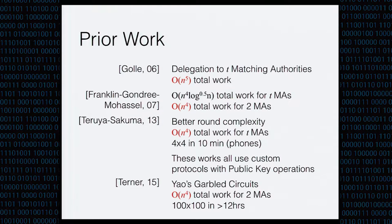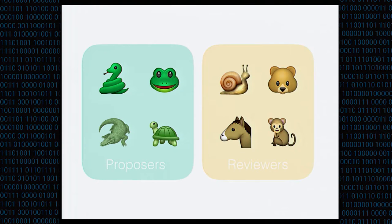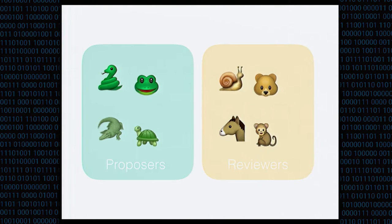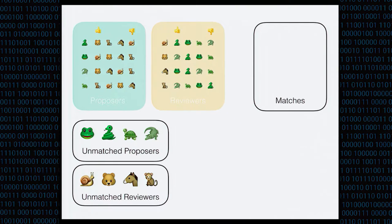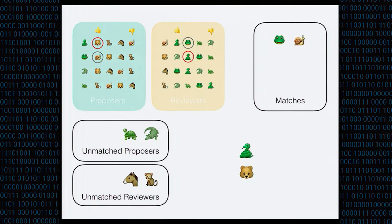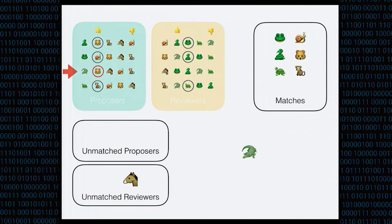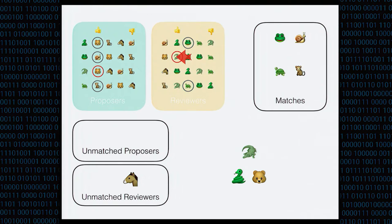So why does that barrier exist? Gale-Shapley, after all, is only an N-squared algorithm. Let's look at the algorithm to extract that information. Suppose again that we have proposers and reviewers, each with preferences over everyone in the opposite set. The algorithm works as follows: consider the first unmatched proposer, who looks at the first entry on their preference list. If the indicated reviewer is unmatched, the match is made and you consider the next unmatched proposer. You may eventually reach a proposer who proposes to a reviewer who's already matched to someone, and in that case the reviewer picks which proposer they like best. Bear actually prefers crocodile to snake, so bear's match with snake is broken and a new match is formed with crocodile, making snake once again unmatched.